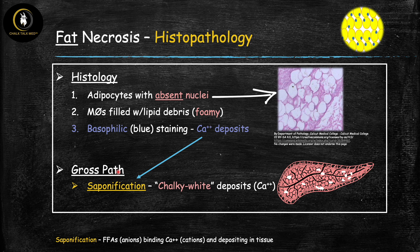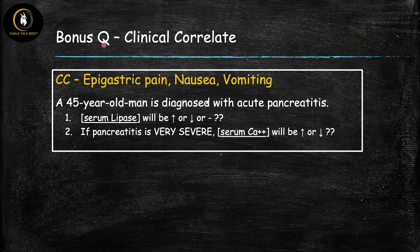For gross pathology, the key finding is also related to saponification. As a consequence of calcium depositing in the tissue, you get a chalky white appearance — the classic finding for fat necrosis. This is a high-yield association: a pancreas that has undergone fat necrosis will show several areas of chalky white deposits consistent with saponification.